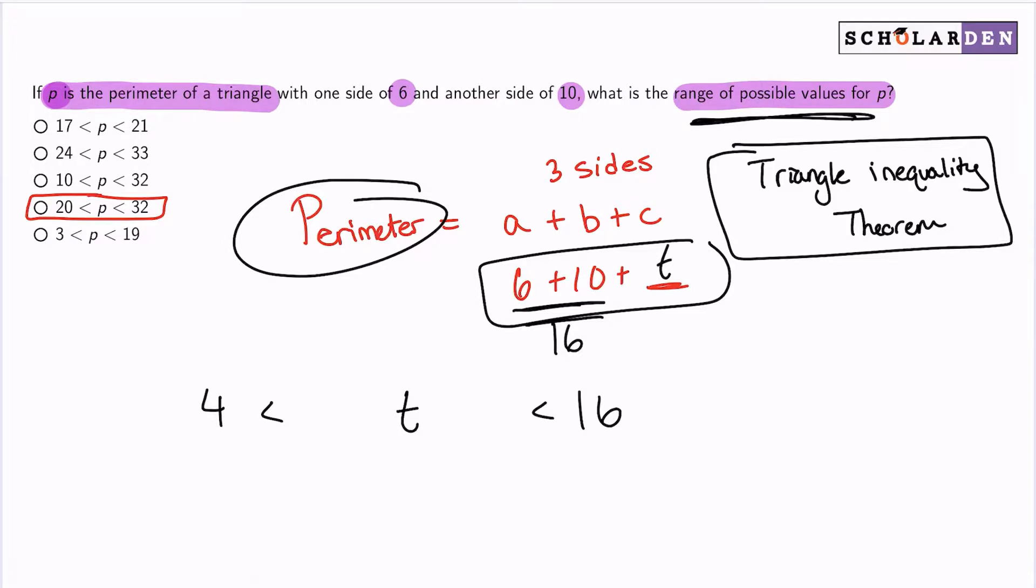If I add them together, what I'm going to do is just add 16 to all of my sides. Remember with inequalities, whatever you do to one side, you do to all sides. So keep the balance, add 16 to everything because this will give me the perimeter.